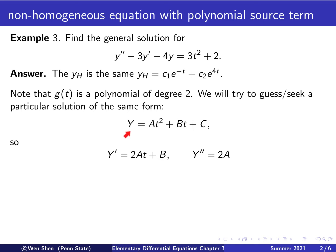That is, I will seek a polynomial of degree 2. So capital Y, the one I'm seeking, is capital A·t squared plus capital B·t plus capital C, where the constants A, B, and C are to be fitted such that this becomes a solution for the non-homogeneous equation. The next step is to plug capital Y into the non-homogeneous equation and find the conditions for these coefficients. We'll need the derivatives, so let's differentiate.